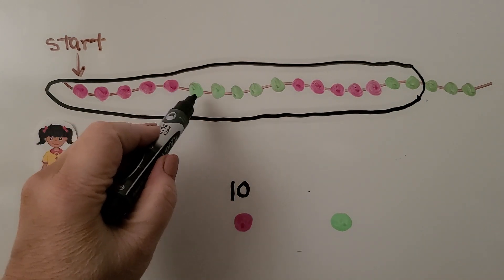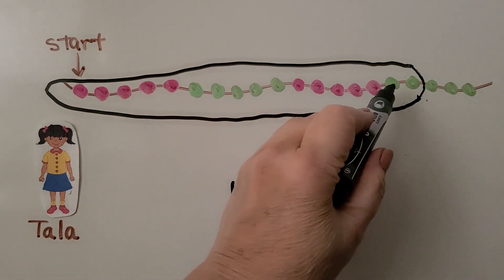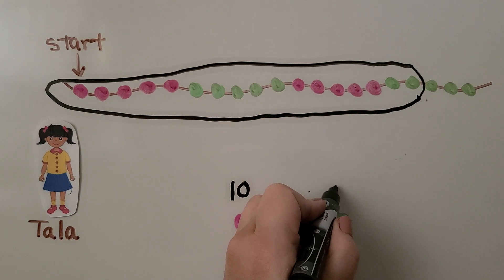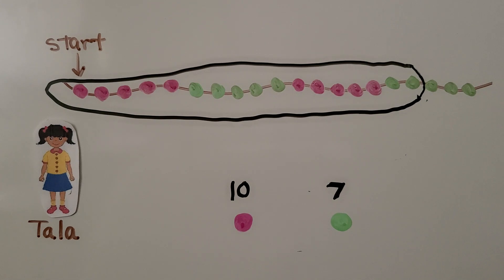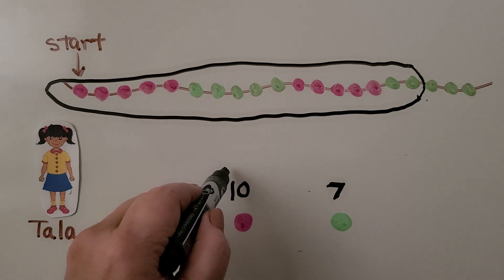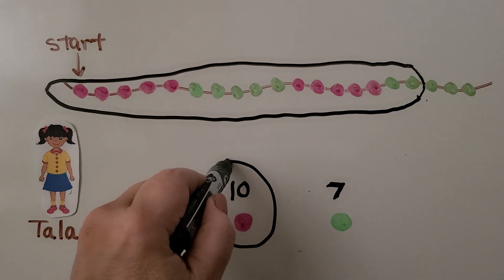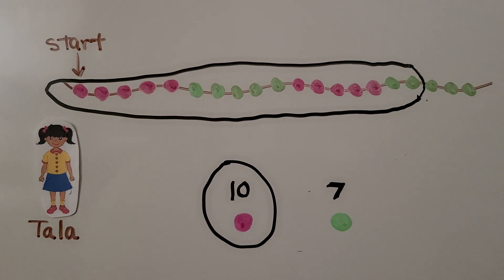And I see 1, 2, 3, 4, 5, 6, 7 of the green ones. Do you think we circled more pink ones or more green ones? If you said pink ones, you're right. 10 is a greater number than 7. There are more pink beads that we circled than green beads.